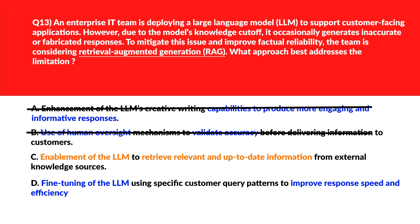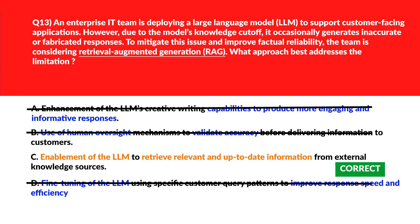We'll move to option C. C says enablement of the LLM to retrieve relevant and up-to-date information from external knowledge sources. Retrieval from external knowledge sources supplements the LLM with current and relevant data — let's keep it. We'll move to D. D says fine-tuning of the LLM using specific customer query patterns to improve response speed and efficiency. Pattern-based fine-tuning improves efficiency but doesn't address hallucination — we'll reject it. Lock option C as the right answer.